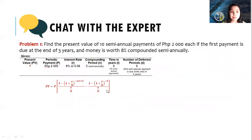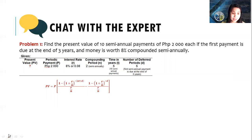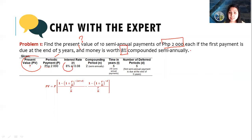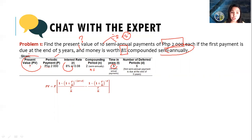Let's start with problem number one. Find the present value of 10 semi-annual payments of $2,000 each if the payment is due at the end of three years and money is worth 8% compounded semi-annually. We are looking for the present value. The periodic payment is $2,000 at an interest rate of 8% compounded semi-annually. So our R is $2,000. There are 10 semi-annual payments, meaning two payments per year, so we are paying the loan for five years. The first payment is due at the end of three years.